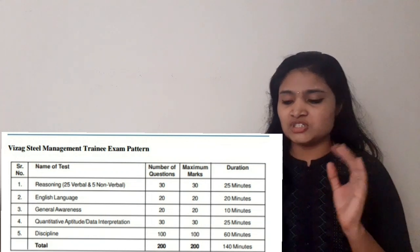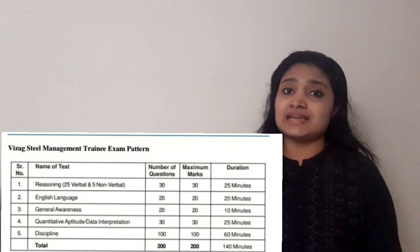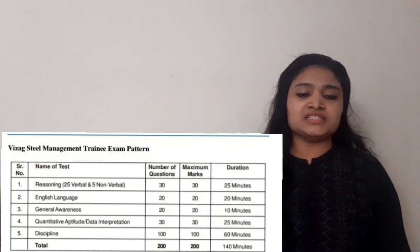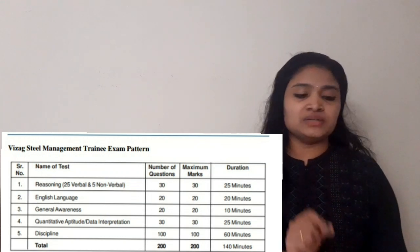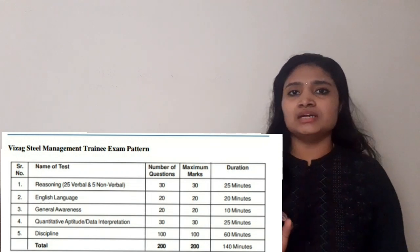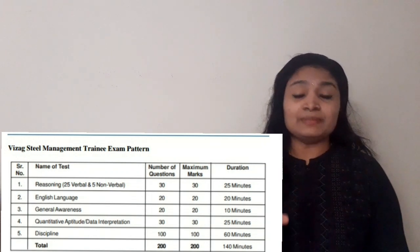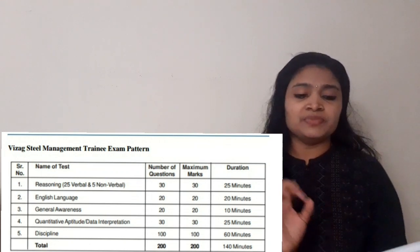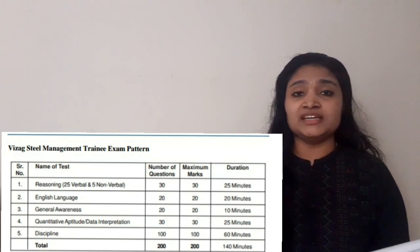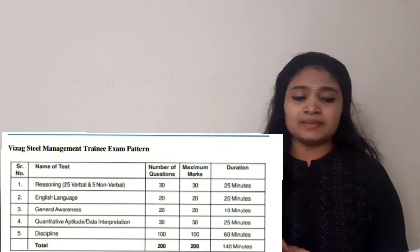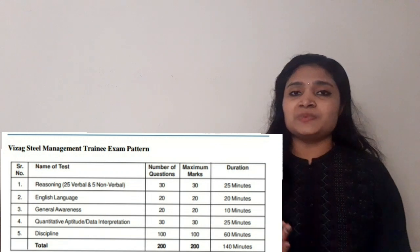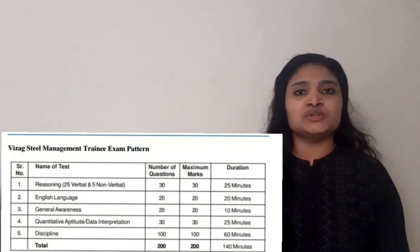Next is Quantitative Aptitude and Data Interpretation. The number of questions is 30, with 30 marks allotted and the time allotted is 25 minutes. After that comes your respective subject section — if you belong to the electronics branch attending the electronics management trainee exam, you will face questions from the electronics subject.